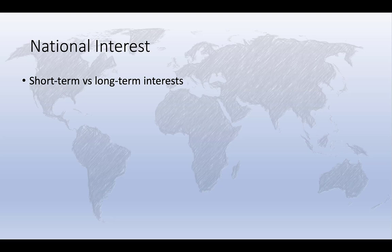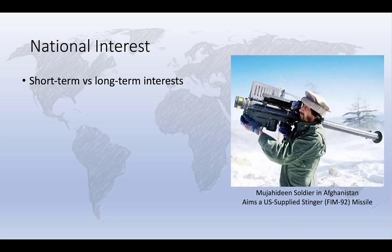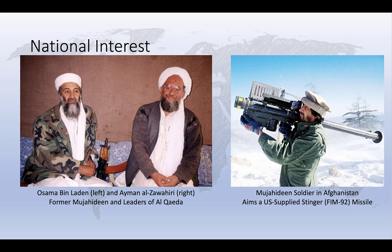There are at least three challenges remaining. First, there's often a tension between short-term and long-term interests, and actions taken in pursuit of the national interest today may create future national security challenges. Consider one example: in the 1980s, the United States offered extensive funding and armaments to support the Mujahideen in Afghanistan, who were fighting against the Soviet Union — a central component of the Cold War strategy of containment. But a decade later, the Mujahideen had transformed into the Taliban, taking control of Afghanistan and offering support for al-Qaeda. Most senior al-Qaeda leadership, including Osama bin Laden and Ayman al-Zawahiri, were veterans of American-supported anti-Soviet operations. The very side the United States supported during the Cold War became its primary opponent in the Global War on Terror.